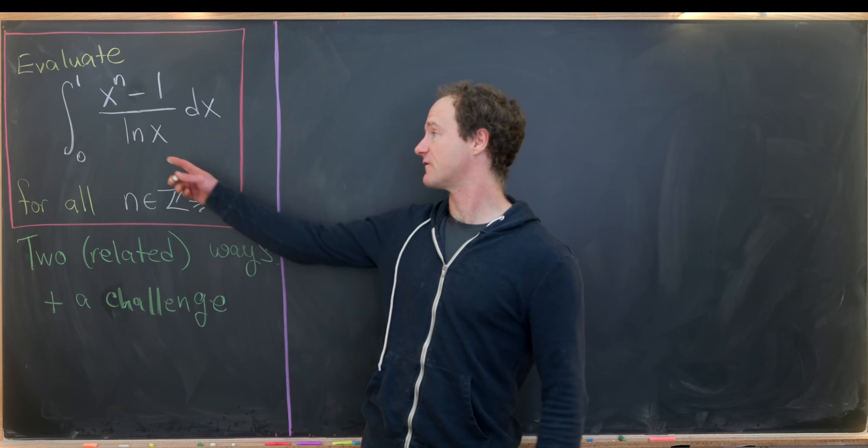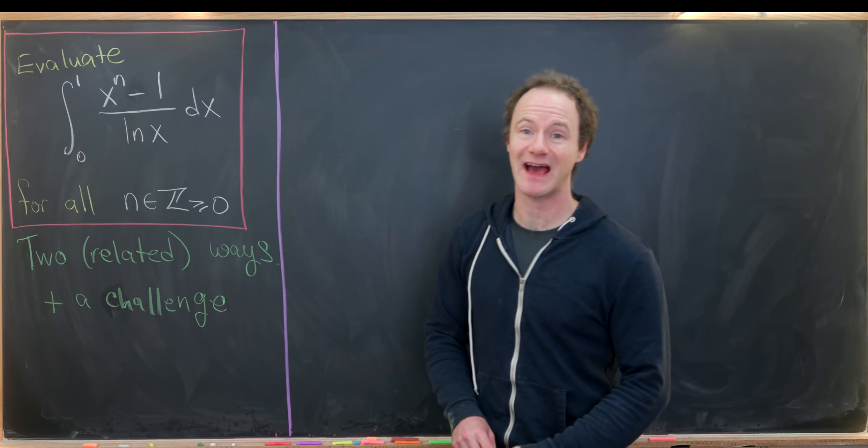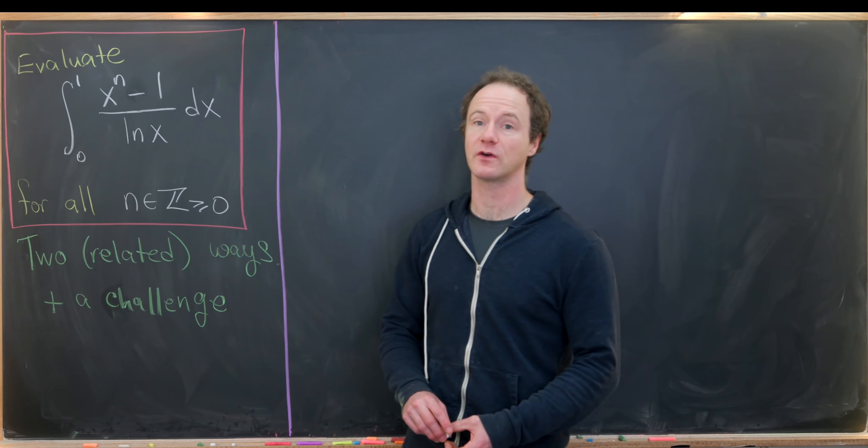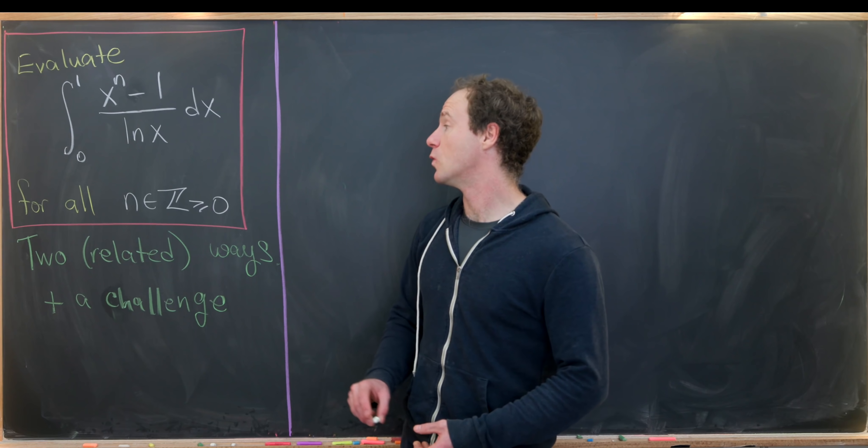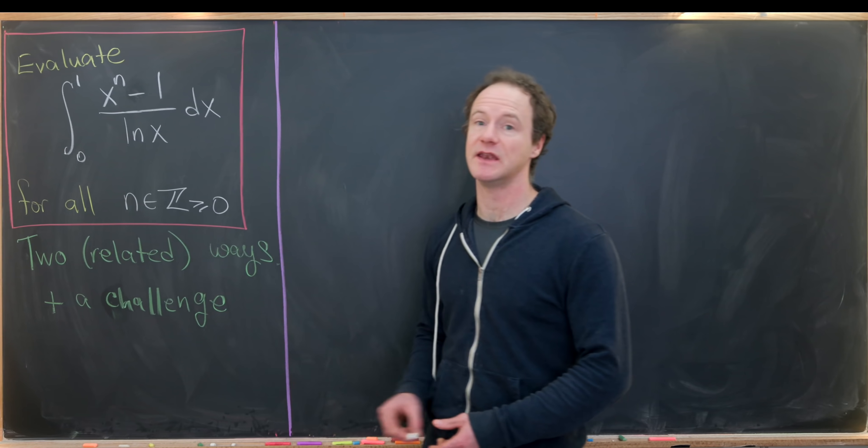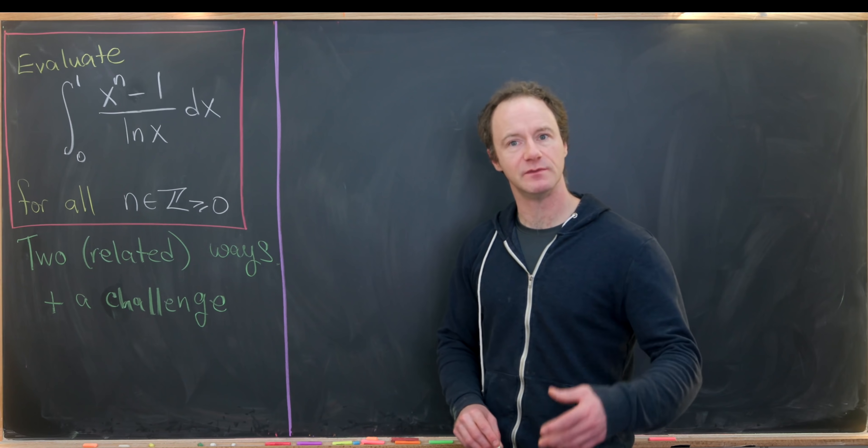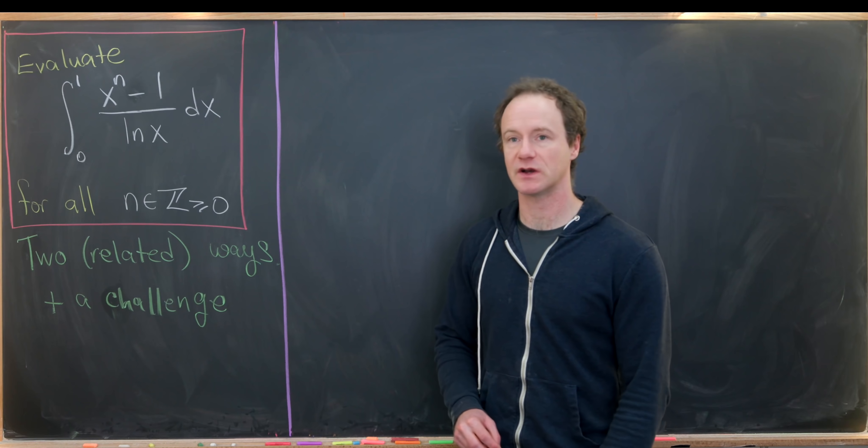So in particular, we want to find the integral from 0 to 1 of x to the n minus 1 over natural log of x, where n is a non-negative integer. So it can be 0, 1, 2, 3, so on and so forth.